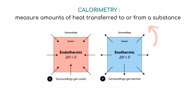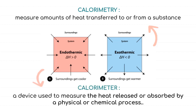Calorimetry is used to measure amounts of heat transferred to or from a substance. To do so, heat is exchanged with a calibrated object known as a calorimeter. A calorimeter is a device used to measure the heat released or absorbed by a physical or chemical process.